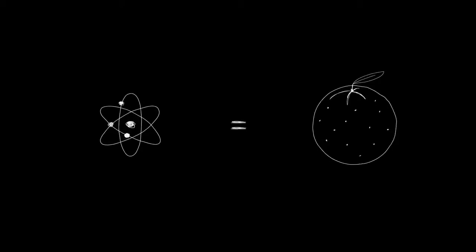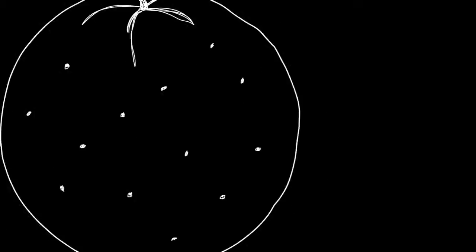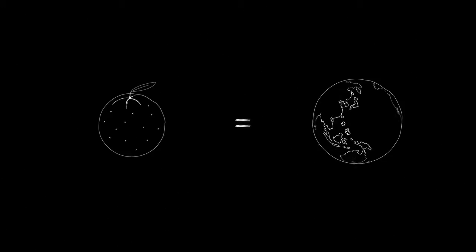When we see the image in the microscope, we see it magnified about 100 million times. If an atom was the size of an orange, then the orange would be the size of the whole planet Earth.